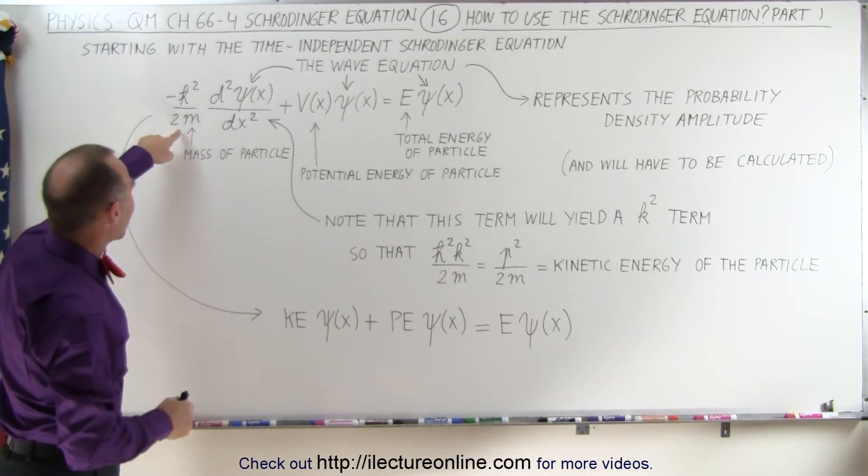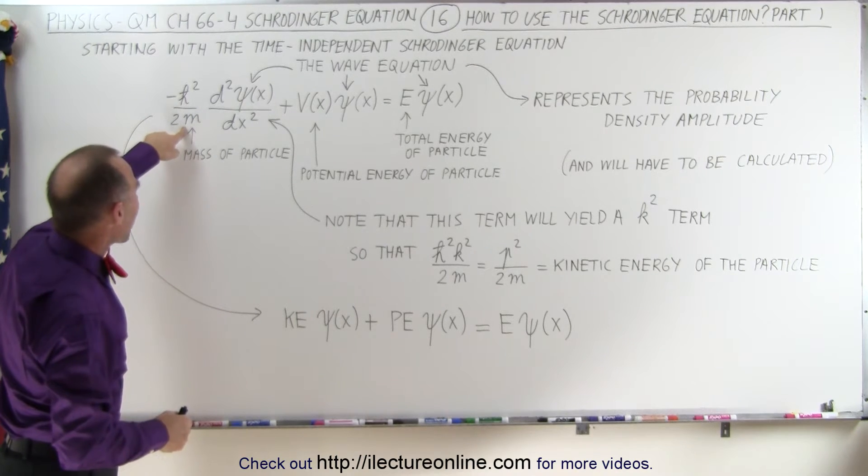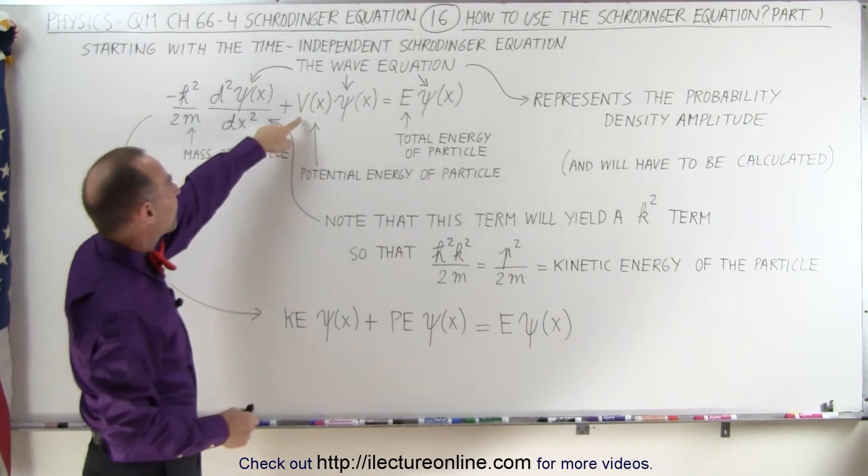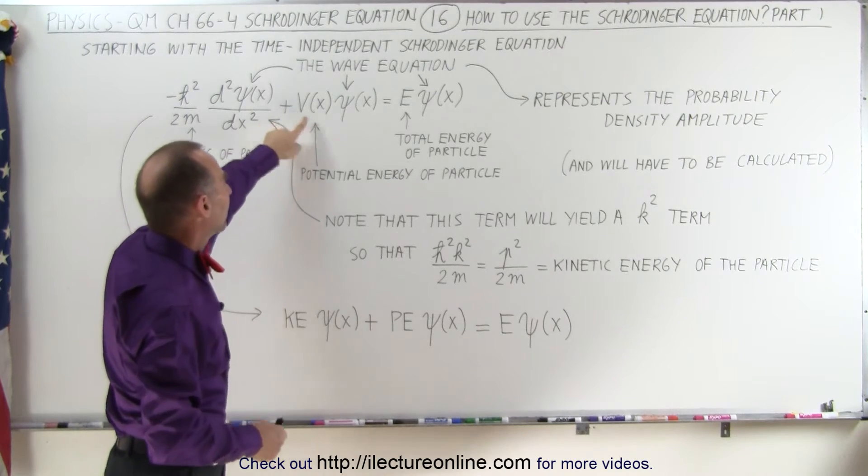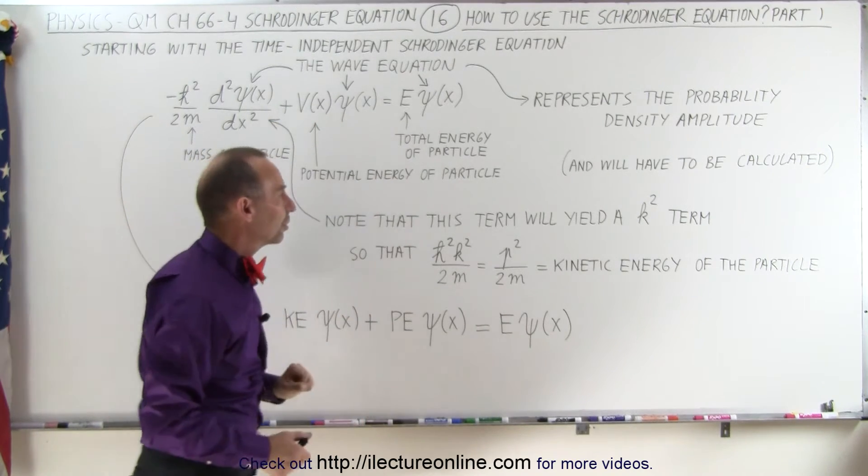Also notice on the left side here, on the first term, here is the mass of the particle. Over here we have the potential energy of the particle, and here we have the total energy of the particle.